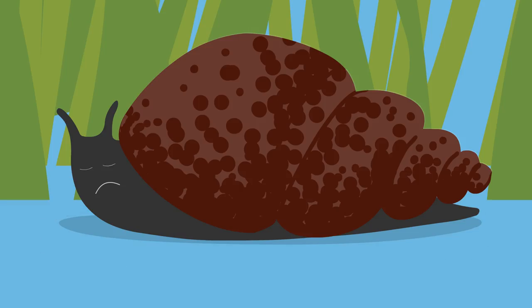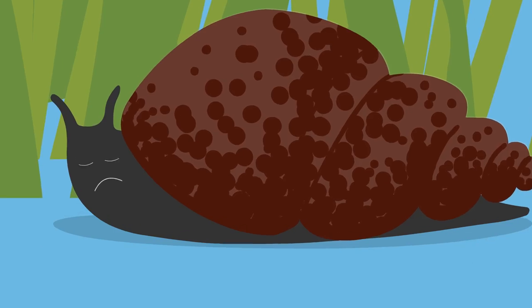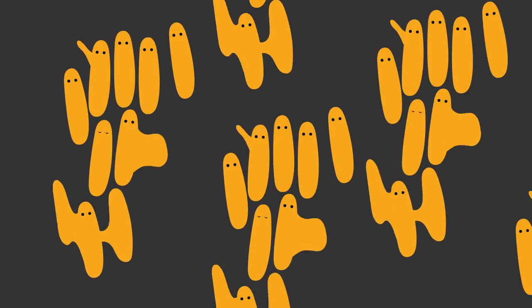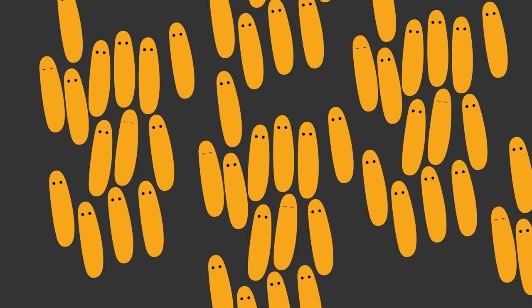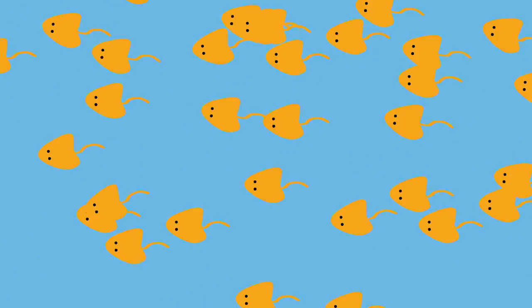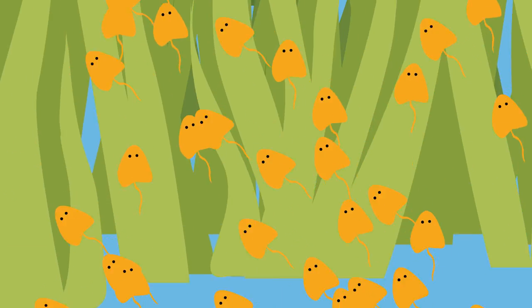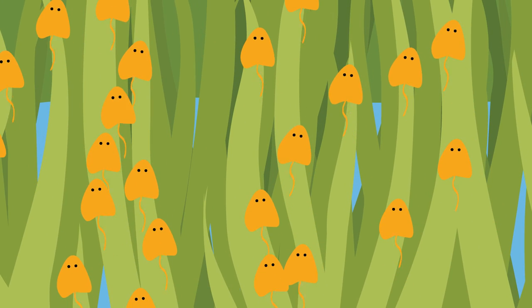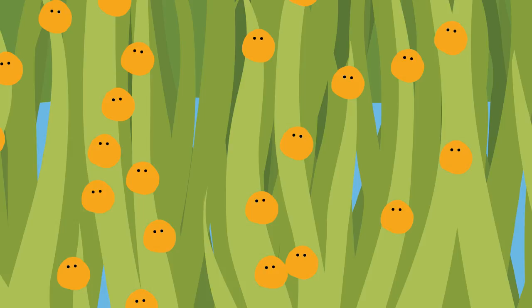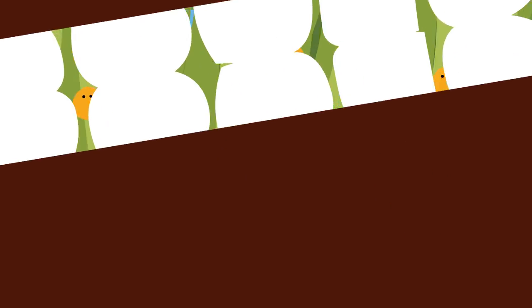Once inside the snail, the parasite develops and multiplies. A few weeks later, it will emerge from the snail as the next larval stage, the cercaria. These larvae go on to form the infectious liver fluke cysts on blades of grass, and it is these cysts that sheep and cattle inadvertently eat while grazing.